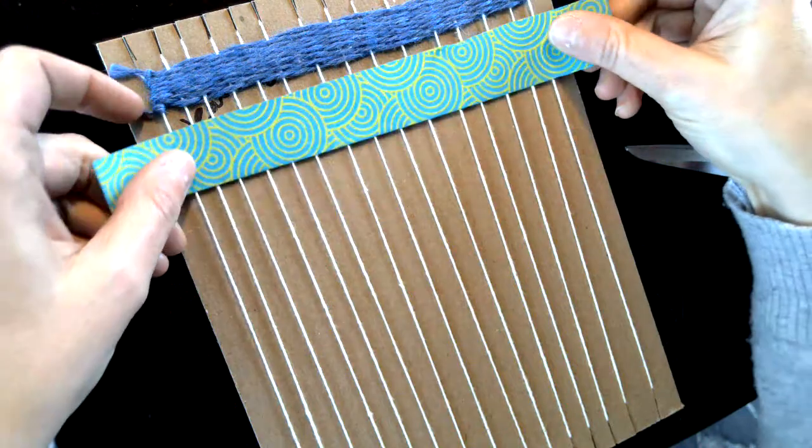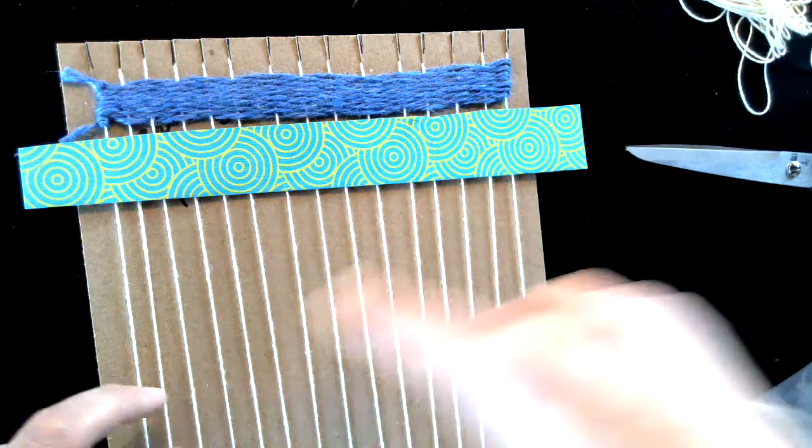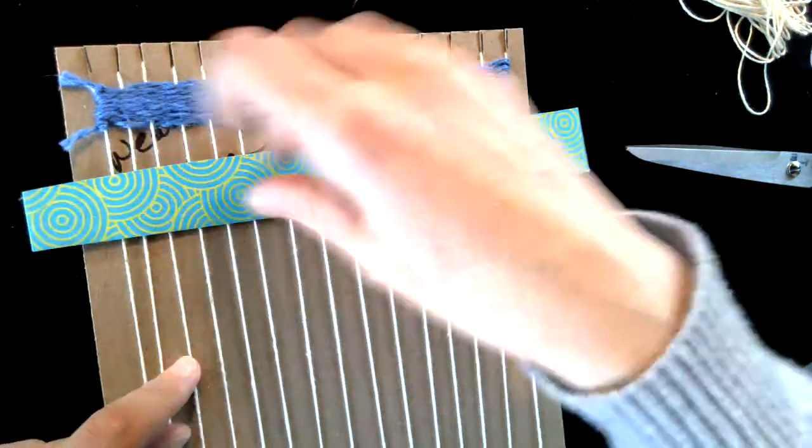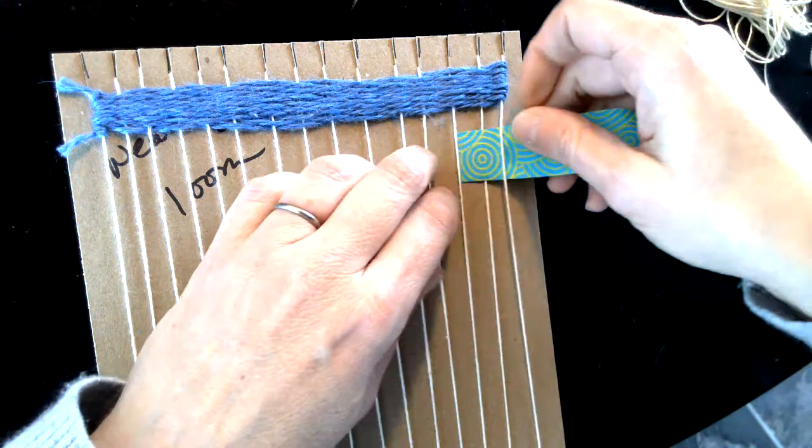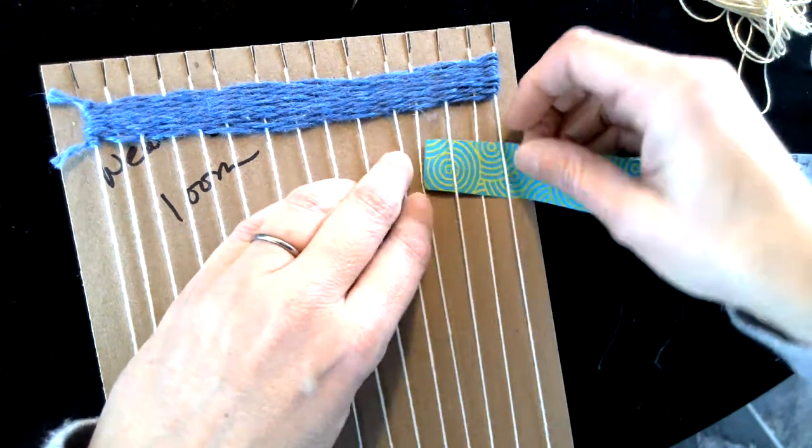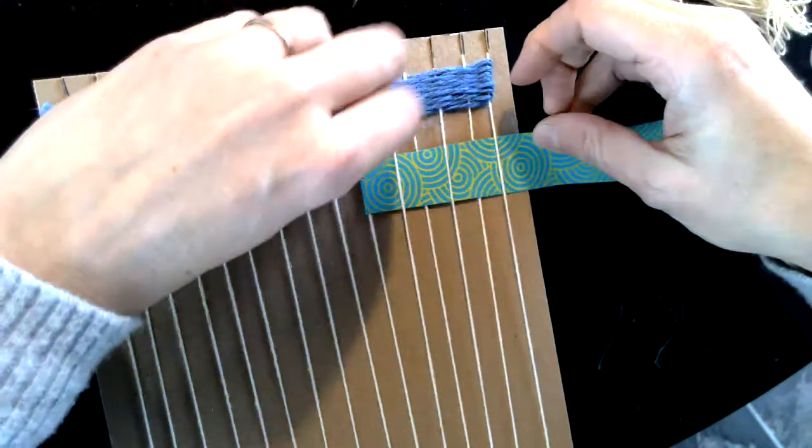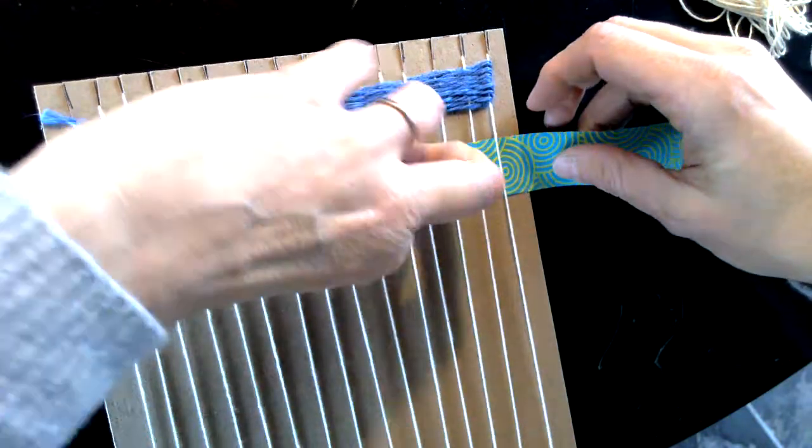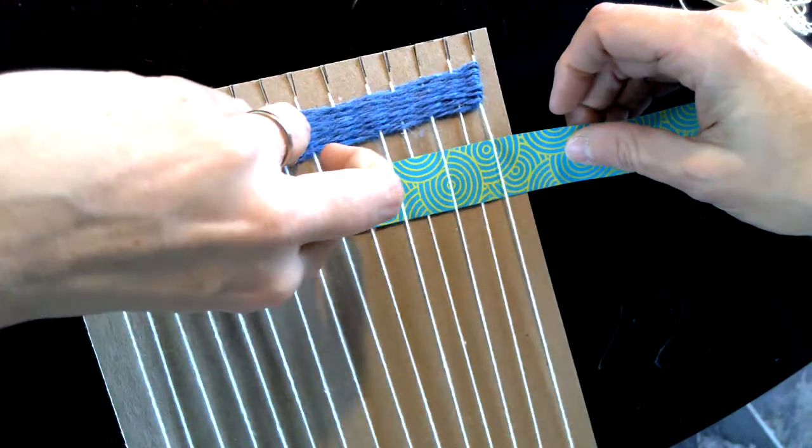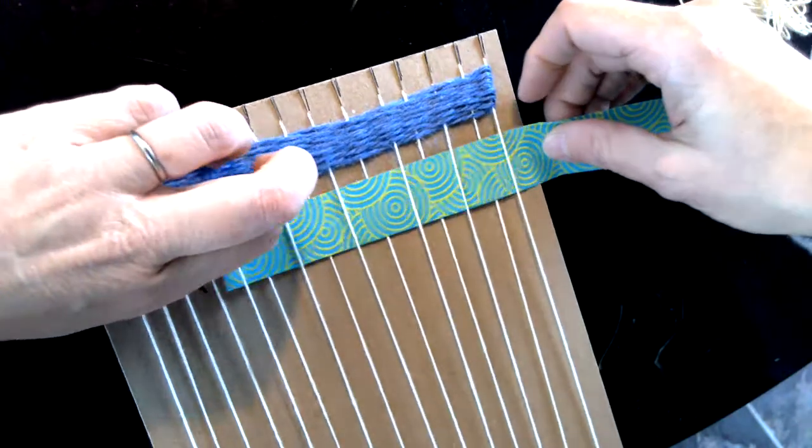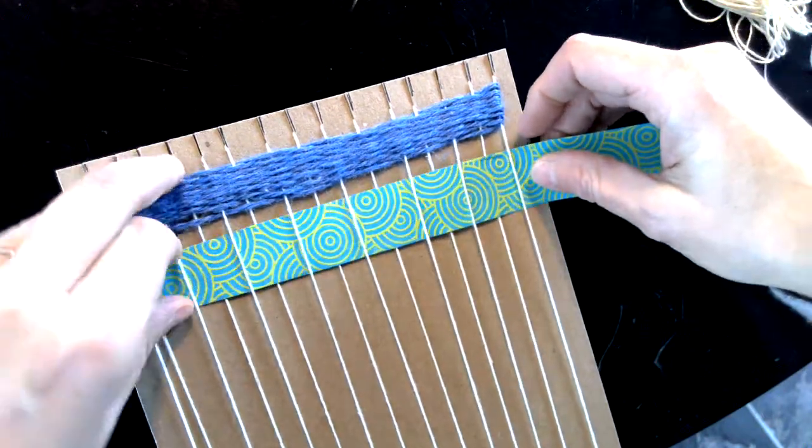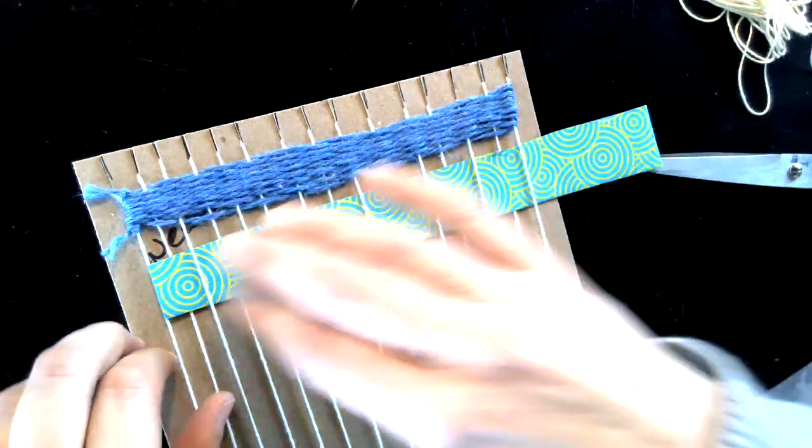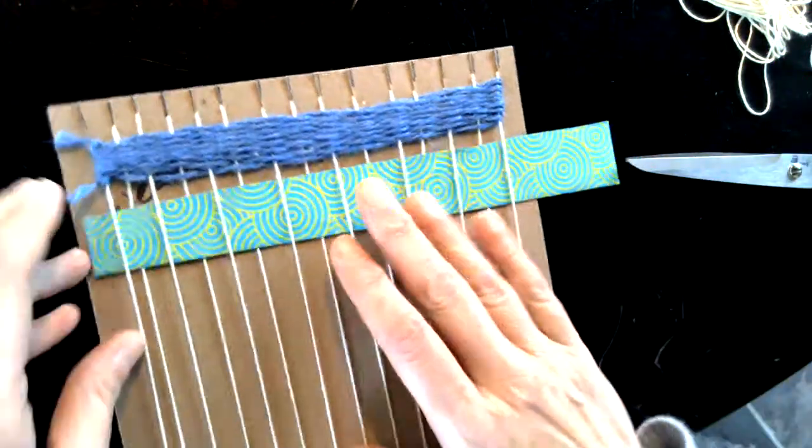Alright, when you're weaving your mixed media through here, it only has to go through once—you don't have to wrap it around. What I mean by that is you're going to start with under, over, and I just use my fingers to kind of pull the string aside. I'm just pushing my paper right through, just like that.